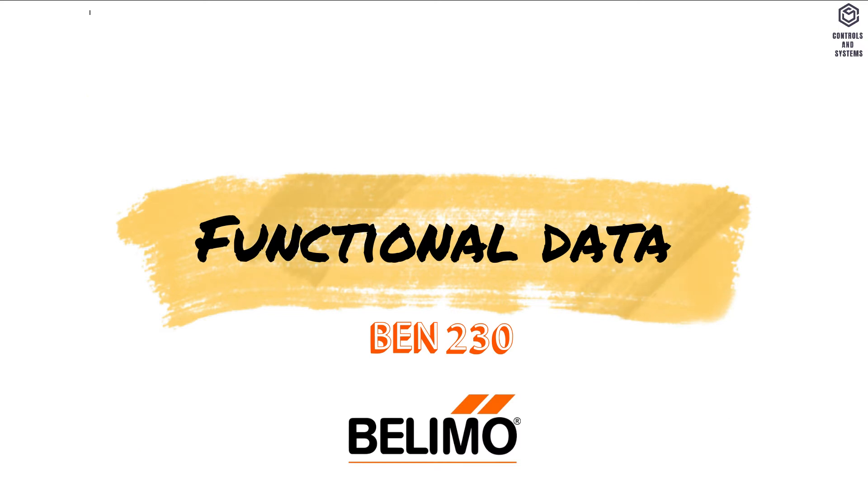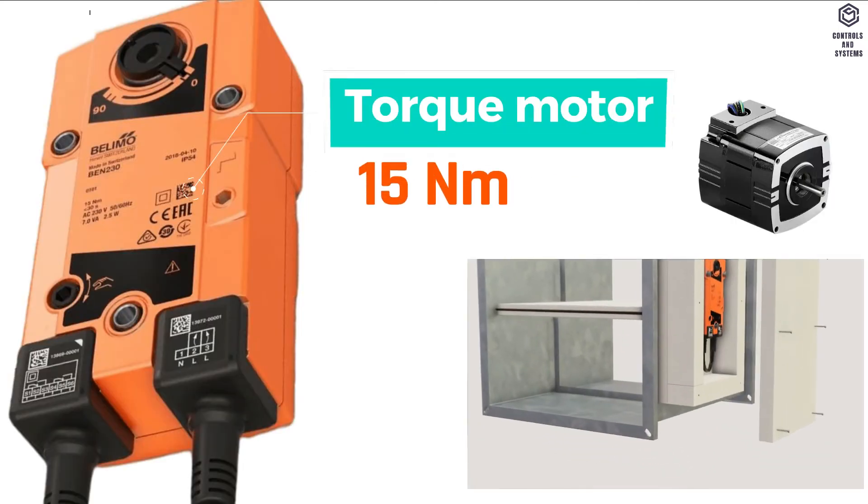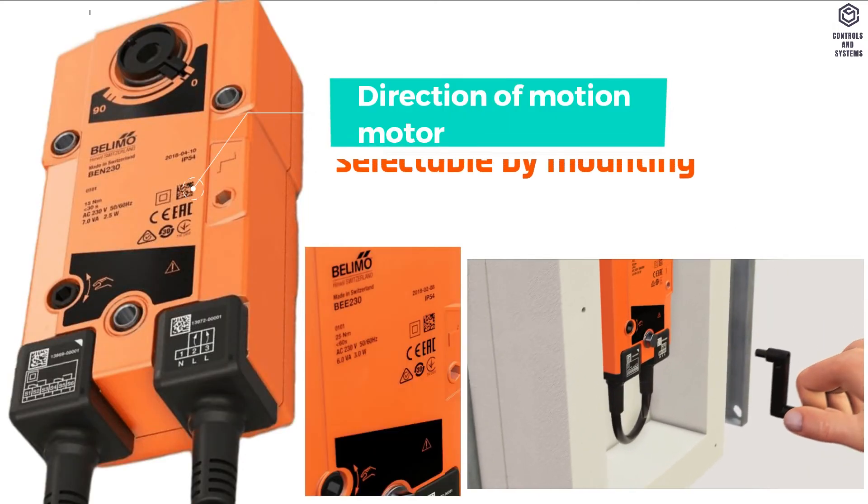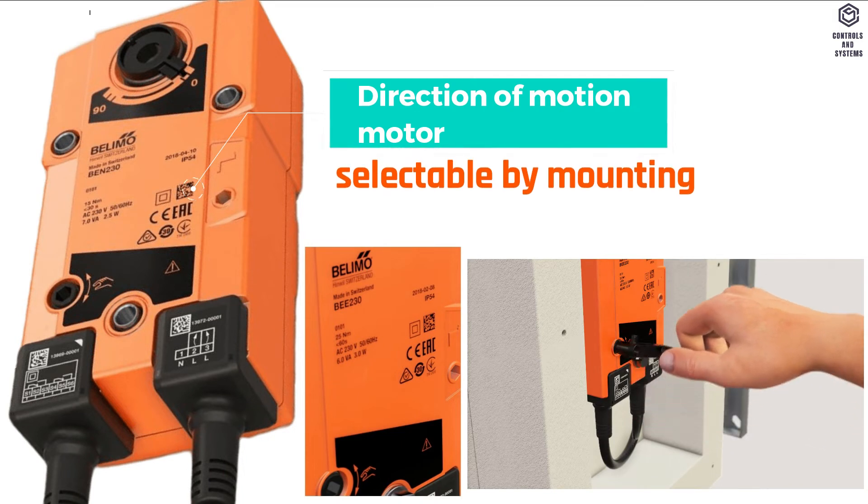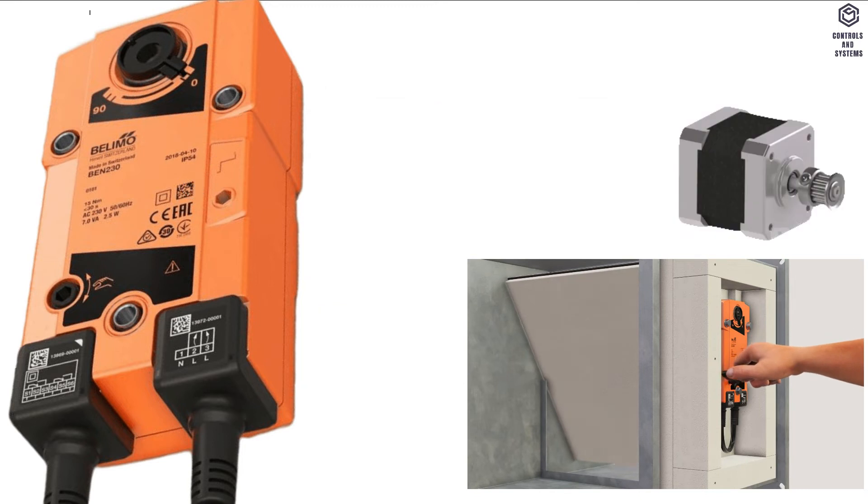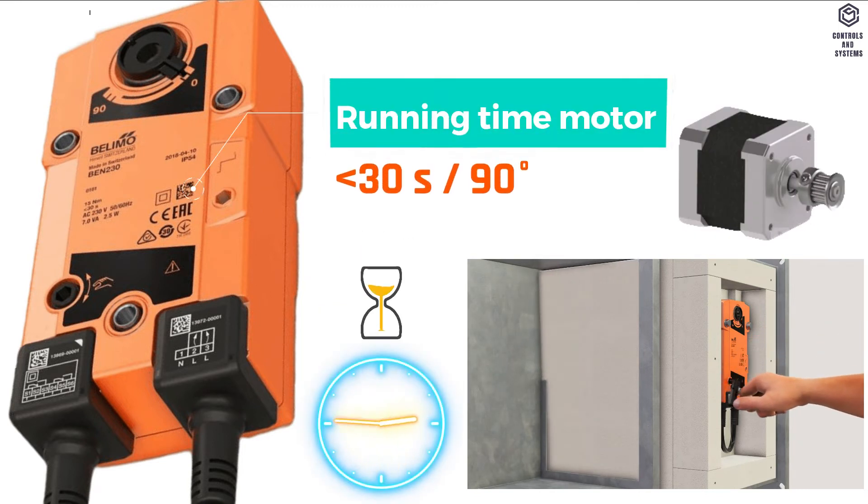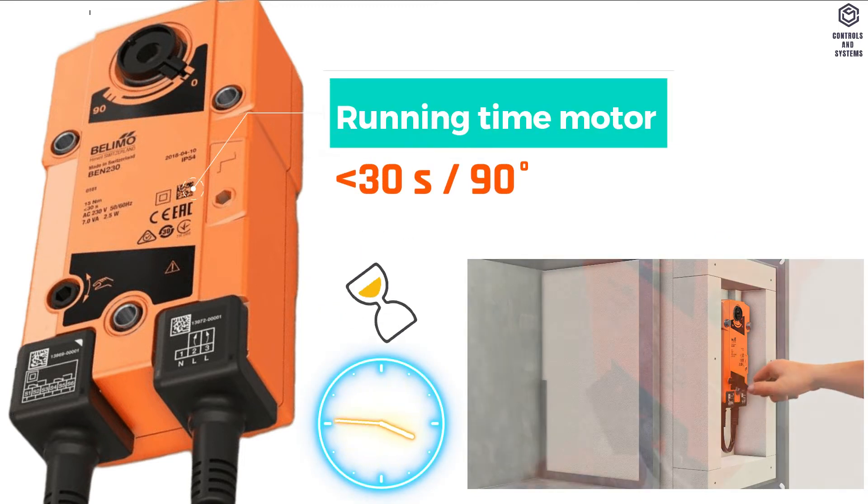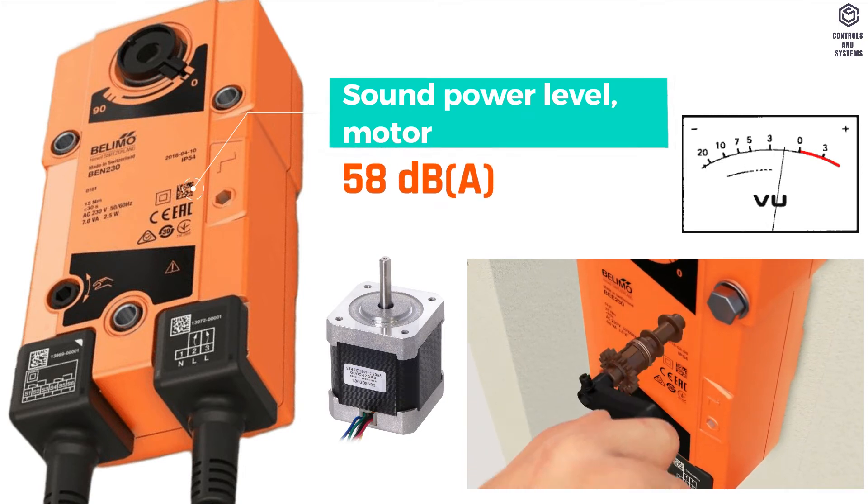Functional data: torque motor is 15 newton meters, direction of motion motor is selectable by mounting, angle of rotation is maximum 95 degree, running time motor is less than 30 seconds at 90 degree. Sound power level of motor is 58 dB.